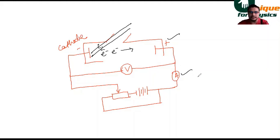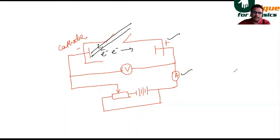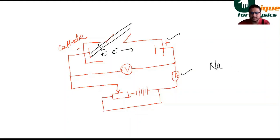Current is measured by the ammeter. There can be many photocathode materials — you can take sodium, zinc, calcium, platinum, or silicon semiconductors. Here we will take sodium as the photocathode material.